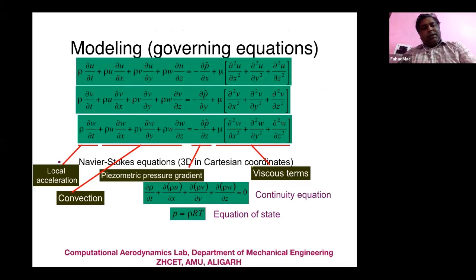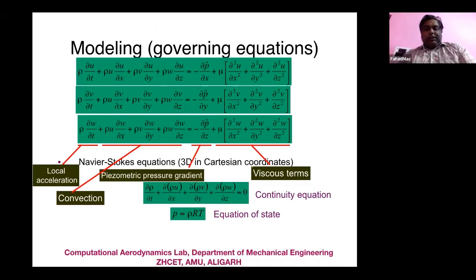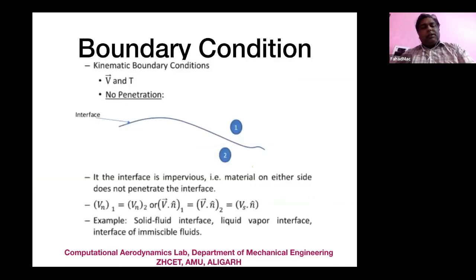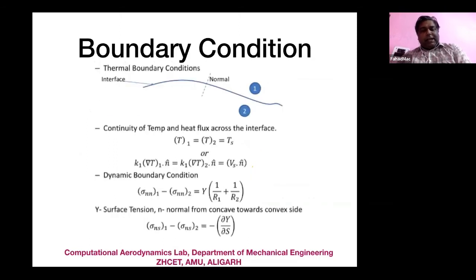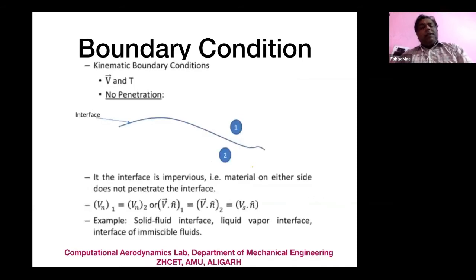In the governing equations, the first term is local acceleration, the second is convective acceleration — the nonlinear term. The third term is the pressure gradient, and the fourth is the viscous term. In continuation, one uses the continuity equation and the equation of state for compressible flows. Boundary conditions are of two types: kinematic and dynamic. Kinematic boundary conditions include no-penetration (normal velocities are equal at the surface, so fluid does not penetrate the solid) and no-slip (tangential velocity equals the wall velocity).